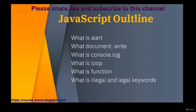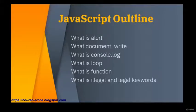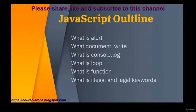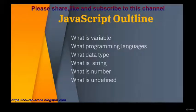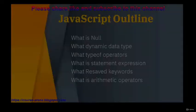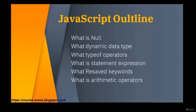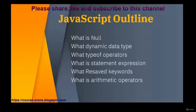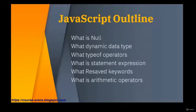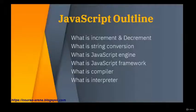The course outline covers: what is alert, what is document.write, what is the console, what is a loop, what is a function, what are legal and illegal keywords, what is a variable, what is JavaScript programming, what is a programming language, what are data types — including string, number, undefined, and null — what are dynamic types, what are statements and expressions, what are reserved keywords, and what are arithmetic operators and increment/decrement operators.